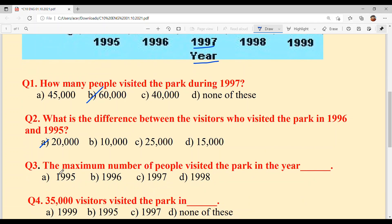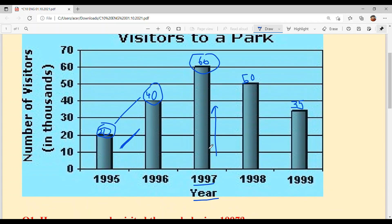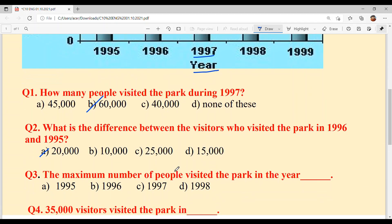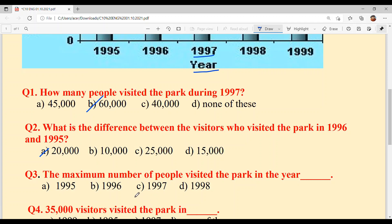Question 3: The maximum number of people visited the park in the year? What is the maximum? It's 60. Which year? 1997. Option C.